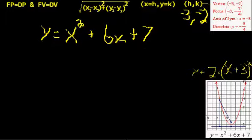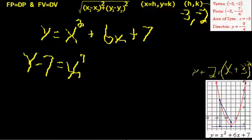If you take this 7 off, so that your constant, your y over here, I've got y minus 7 is x squared plus 6x. Then if you take half, this is the complete the square part.